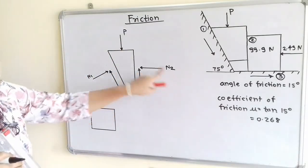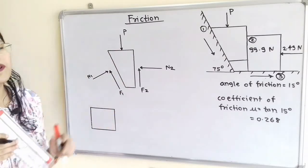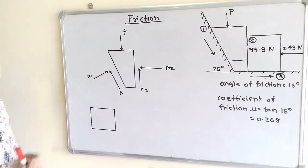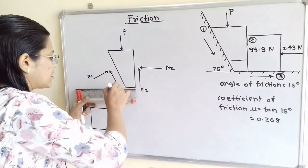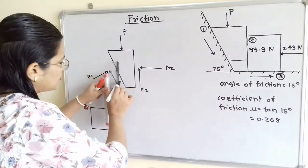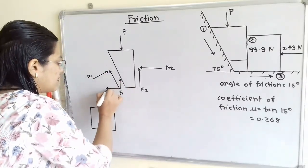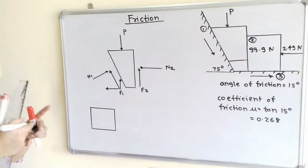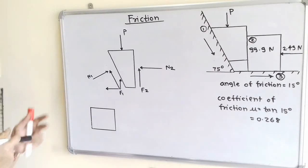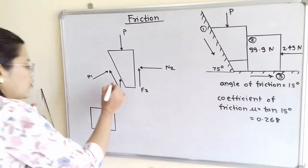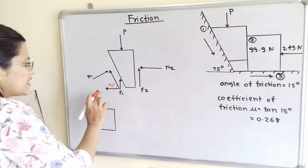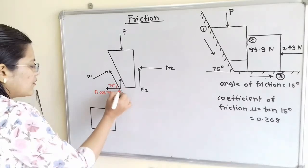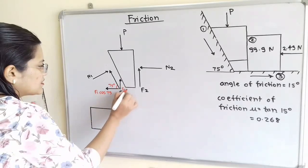Now F2, N2, and P are horizontal forces, and we will resolve F1 and N1 into horizontal and vertical components. F1 is parallel to the inclined surface and makes an angle of 75 degrees with horizontal. So the horizontal component is F1 cos 75 and the vertical component is F1 sin 75.